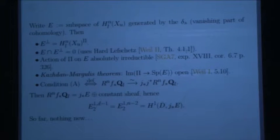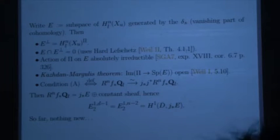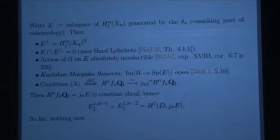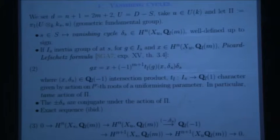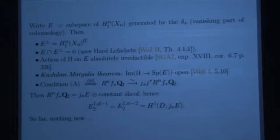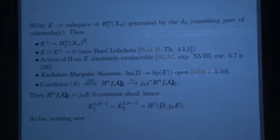One can compute the cohomology of a singular fiber at s in terms of the generic fiber and this intersection product. The most important subspace is E, generated by the vanishing cycles. Its orthogonal complement for the intersection pairing is exactly the fixed points of the geometric fundamental group. Since I've already used Hard Lefschetz, I'll also use that E is non-degenerate for this intersection pairing — this is implied by Hard Lefschetz.